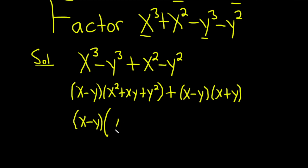Well, all of this. So this will be x squared plus xy plus y squared. And then x minus y times what is going to give us all this? Well, just x plus y.